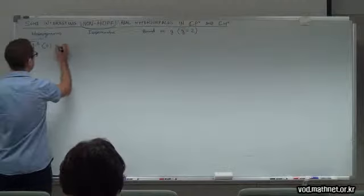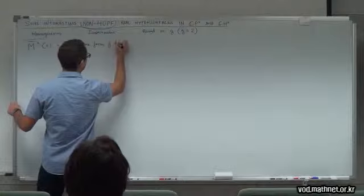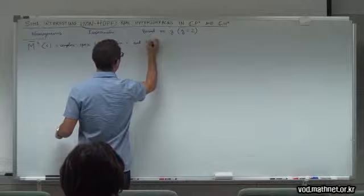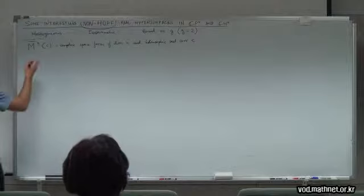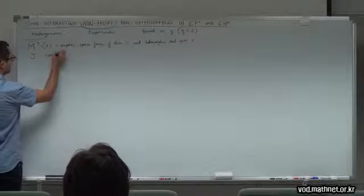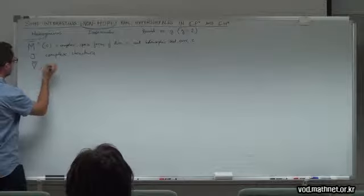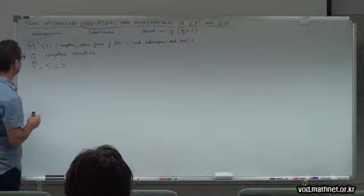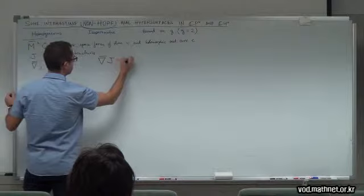As usual, I will denote by J the complex structure or Kähler structure. I'll use the Levi-Civita connection associated with the Kähler metric. The fact that this is a Kähler manifold basically means that the covariant derivative of the complex structure is zero.